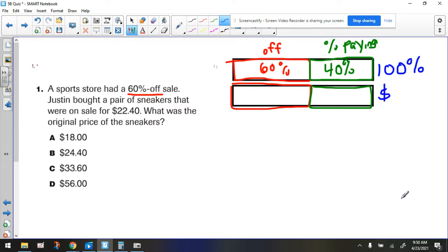Let's try to figure out by reading it again. Again, Justin bought a pair of sneakers that were on sale for $22.40. So if that was the sale, right, sale price, then that means we're going to put it right here, $22.40.